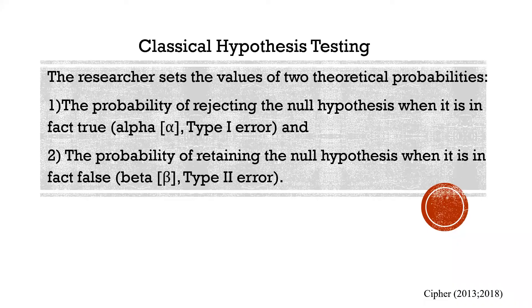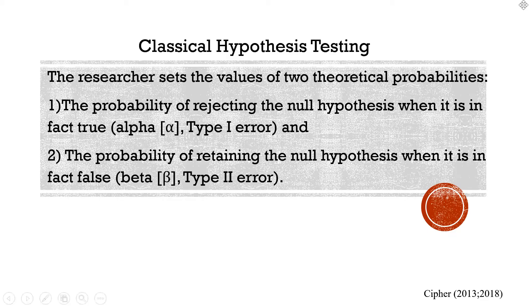As opposed to type 2 error, which is the probability of retaining the null when it is false. In other words, stating that there is no difference or there is no association when, in fact, you're wrong. And there is. These are two theoretical probabilities, very difficult to prove in actuality, which is why they're called theoretical.